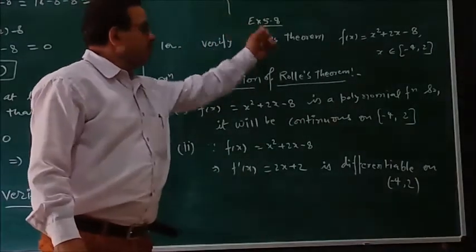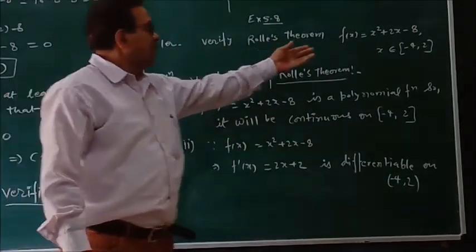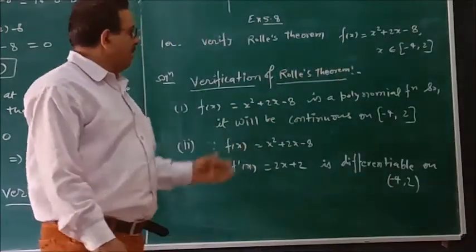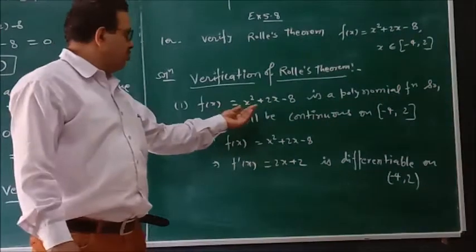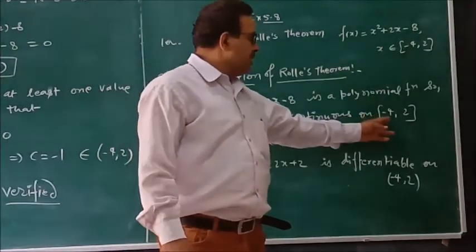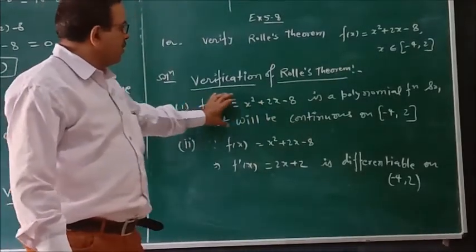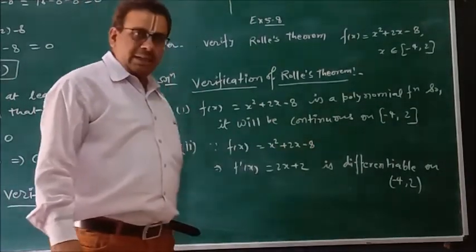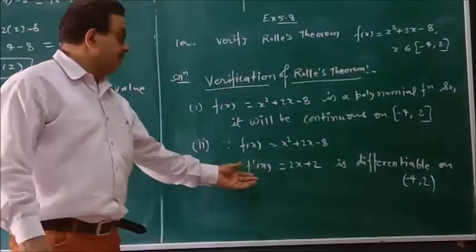Now your first question, Exercise 5.8 — verify Roll's Theorem where f(x) equals x squared plus x minus 8. The given interval is the closed interval minus 4 to 2.